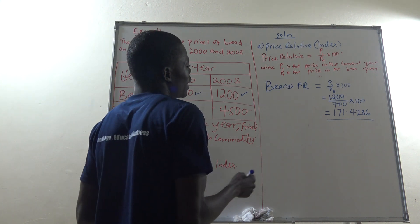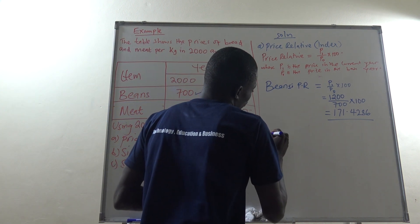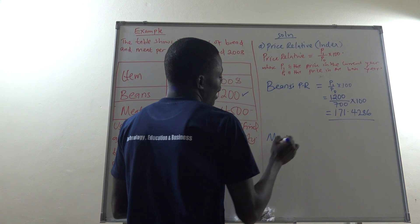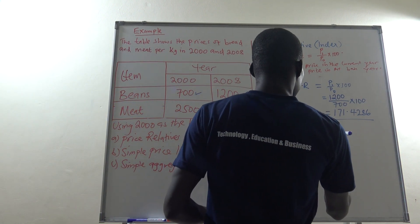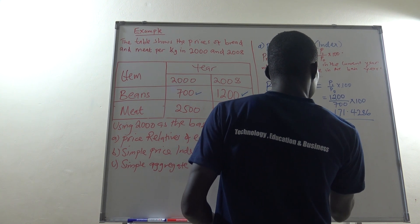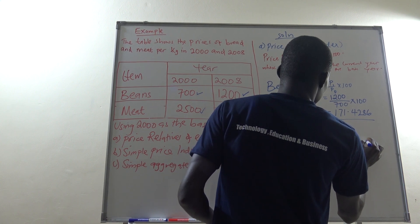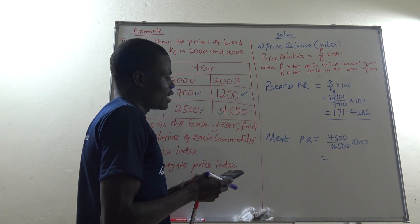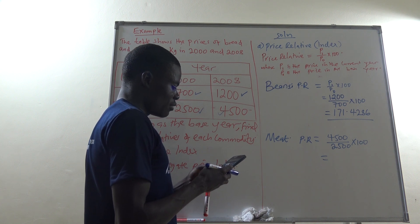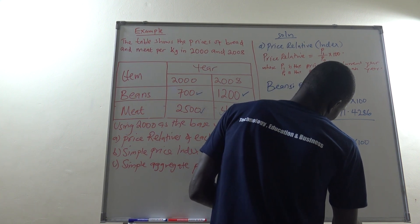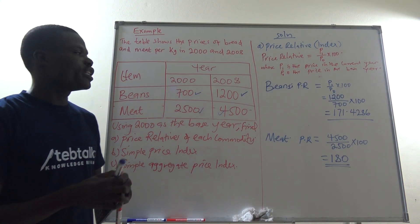The second commodity is meat. Price relative of meat = (P1 / P0) × 100. P1 = price of meat in 2008 = 4500, and P0 = price of meat in 2000 = 2500. So: 4500 / 2500 × 100 = 180. That completes part (a) — the price relative of each commodity.